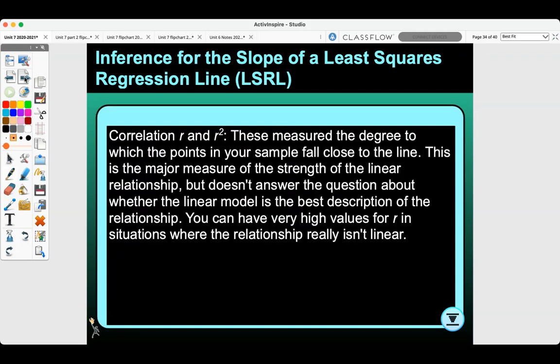First is correlation, r and r squared. These measure the degree to which the points in your sample fall close to the line. This is the major measure of the strength of the linear relationship, but doesn't answer the question about whether the linear model is the best description of the relationship. You can have very high values for r in situations where the relationship isn't really linear.